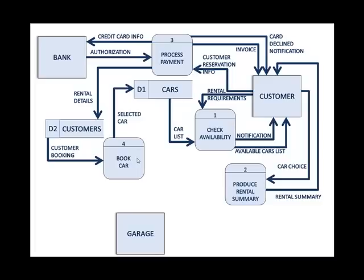The book car process will update the cars data store with the selected car so it is removed from the available list — otherwise another customer could rent it. It will also send the garage a renter notification, maybe via email or text, so the garage knows which customer is coming, on which day and time, and can have the car ready for them.